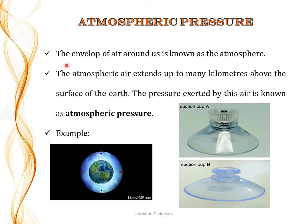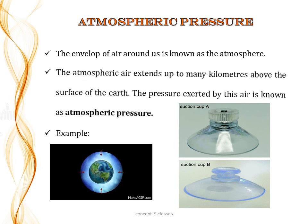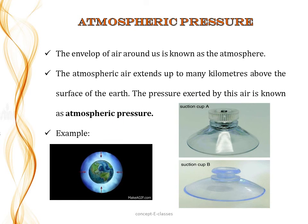The envelope of air around us is known as the atmosphere. The atmospheric air extends up to many kilometers above the surface of the earth, and the pressure exerted by this air is known as atmospheric pressure. When you press a rubber sucker against a surface, most of the air between the sucker and the surface escapes out, and the sucker sticks because atmospheric pressure is exerted from outside. To pull the sucker away, the applied force must be large enough to overcome atmospheric pressure. We are not crushed under this pressure because the pressure inside our body equals atmospheric pressure, balancing the pressure from outside.